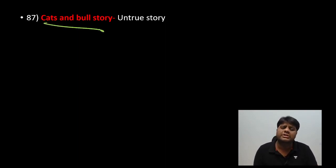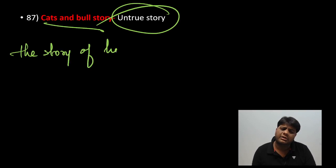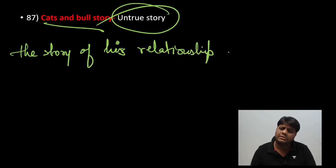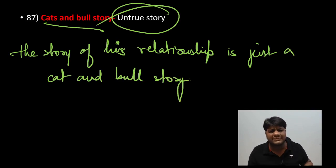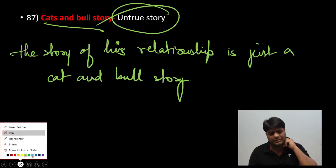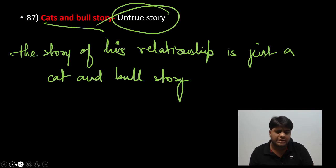Next: 'cock and bull story.' A cock and bull story has no reality — it means an untrue story. For example: 'The story of his relationship is just a cock and bull story.' Very simple — it just means a fabricated or false story.